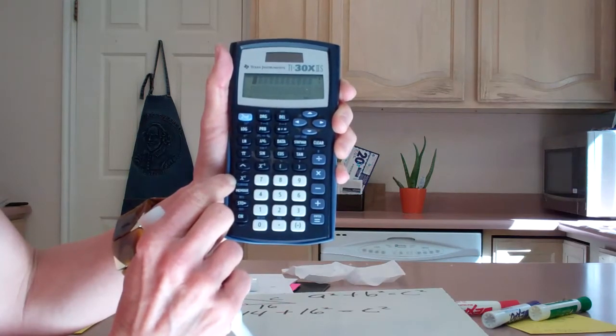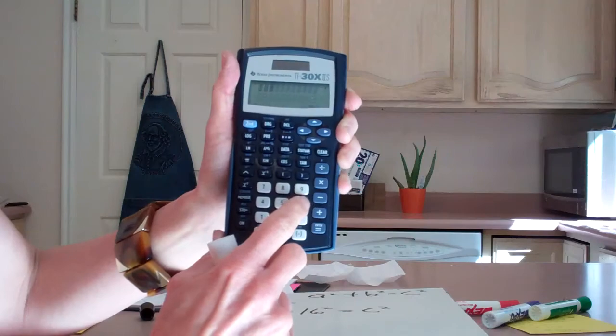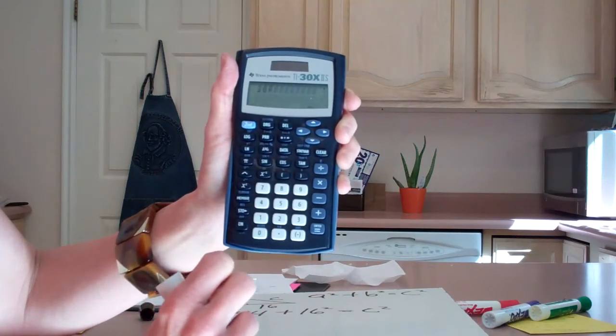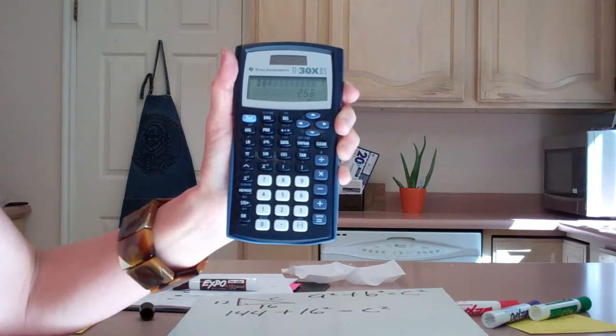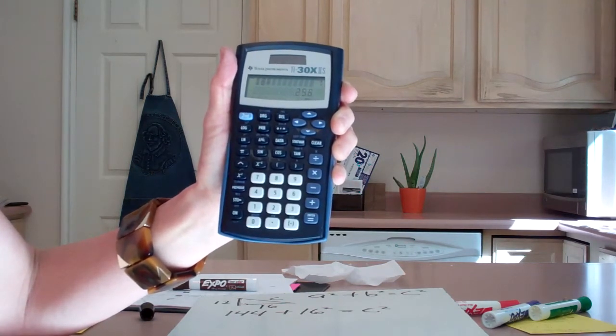If I want to find 16 squared in my basic calculator, I'll type in 16, X squared, equals, and I've got an answer: 256. The calculator did that for me.